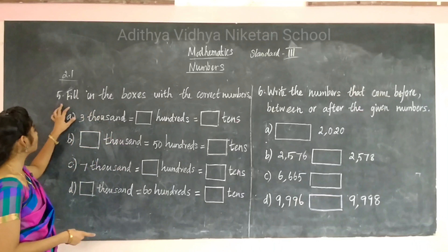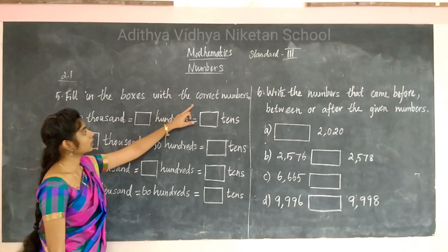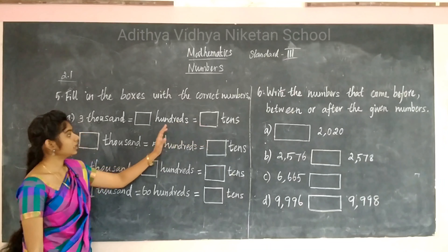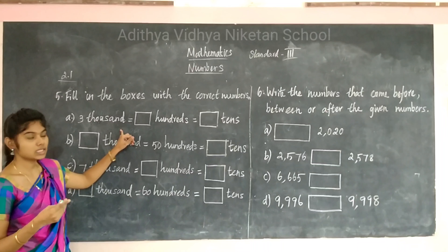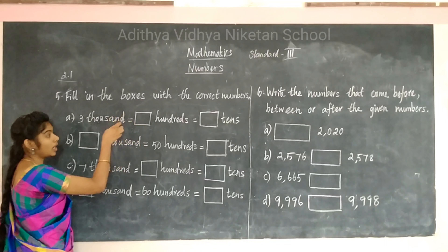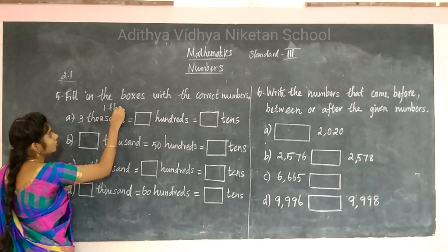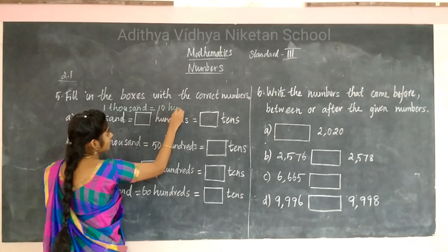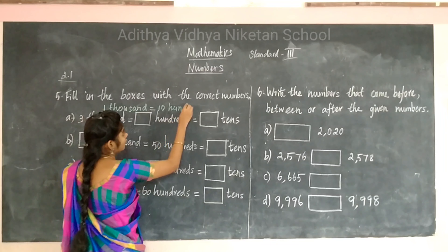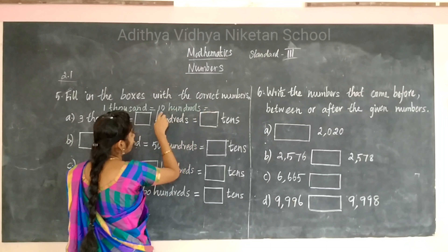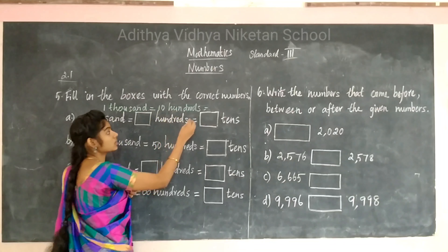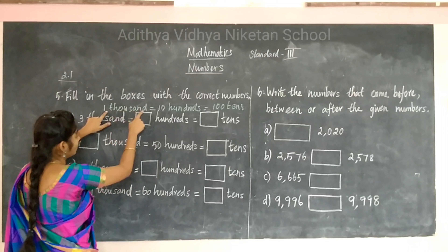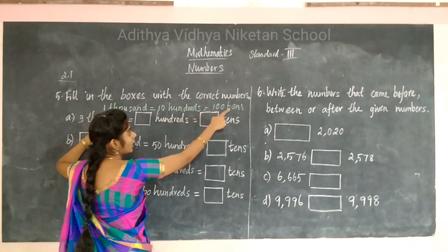Now let's recall what we learned in the last class — fill in the boxes with the correct numbers. 1000 is equal to 10 hundreds. There are 10 hundreds in 1000. In 10 hundreds there are 100 tens. So in 1000 we have 100 tens.